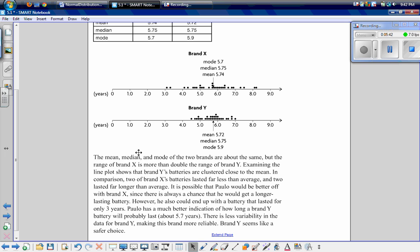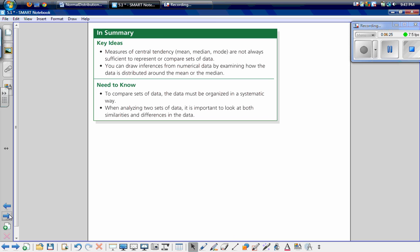So in summary, the mean, median, and mode of the two brands are about the same, but the range of brand X is more than double the range of brand Y. Examining the line plot shows brand Y's batteries are clustered close to the mean. In comparison, two of brand X's batteries lasted far less than average, and two lasted far longer than average. So for Paolo to make his decision, he needs to also look at the dispersion of the values. It's possible that he might be better off with brand X because there's always a chance that he could get a longer lasting battery. However, he could also end up with a battery that lasted for a very short period of time. He has a better indication of how long the battery is going to last in brand Y because they're all relatively close together.